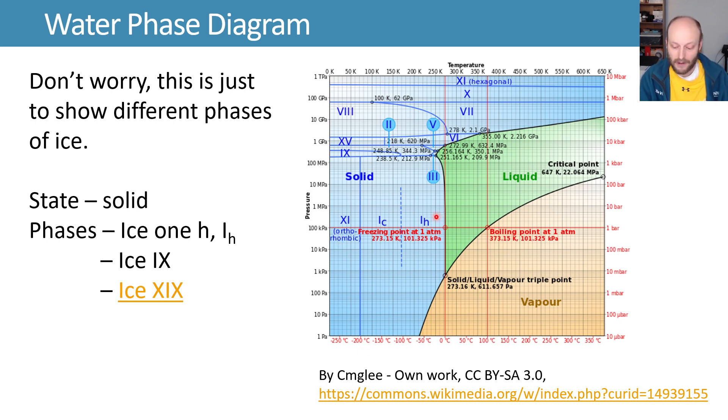Similarly, if you make ice at very high pressures, you get different phases of that solid state of matter. If you've read Cat's Cradle by Kurt Vonnegut, don't worry—Ice-nine is a real thing, it does show up right there, but it doesn't behave like it does in that science fiction book. We've got phases and states.